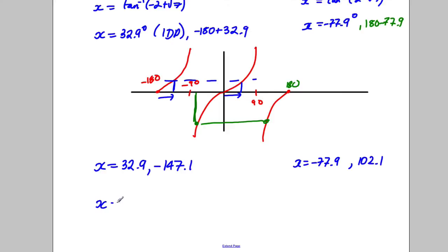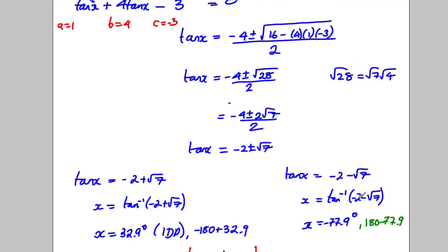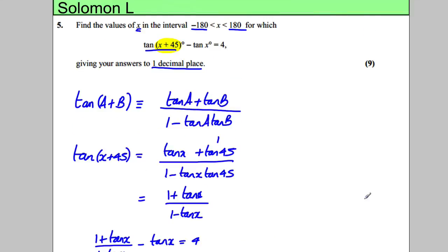So lining these up in the right order, X is therefore equal to the following: negative 147.1 degrees, negative 77.9 degrees, 32.9 degrees, and 102.1 degrees, all to one decimal place. Obviously you could substitute those back in here to check you've got the right answer, but otherwise we're done.